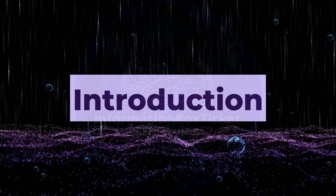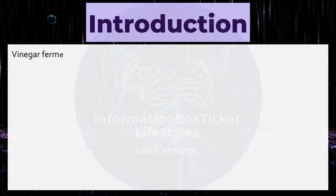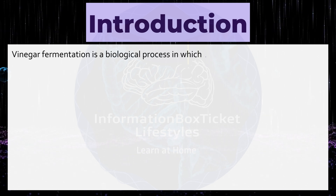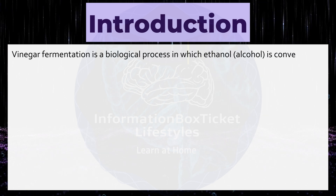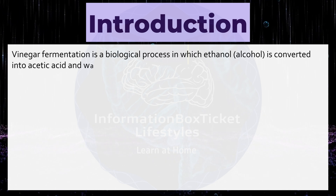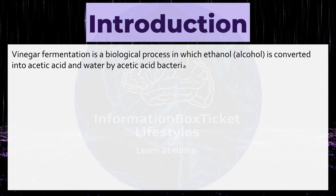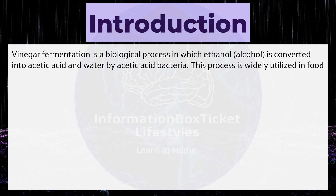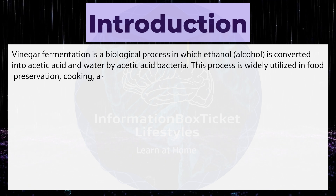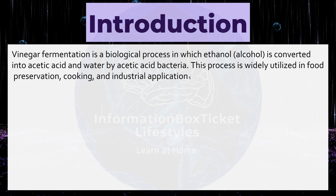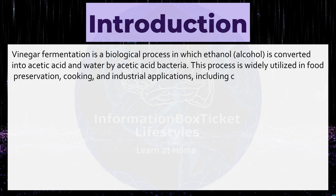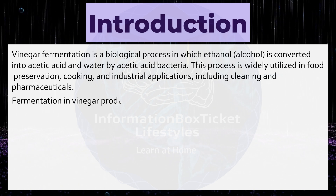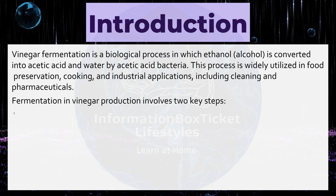Introduction. Vinegar fermentation is a biological process in which ethanol, alcohol, is converted into acetic acid and water by acetic acid bacteria. This process is widely utilized in food preservation, cooking, and industrial applications, including cleaning and pharmaceuticals. Fermentation in vinegar production involves two key steps.